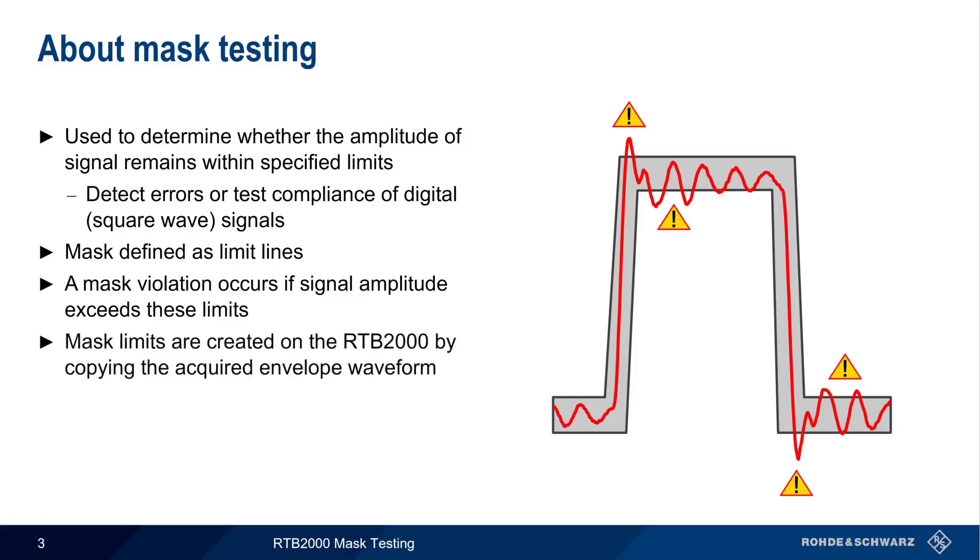On the RTB, masks are created by first copying an acquired waveform, after which the limits are moved and/or stretched to create a tolerance region around the waveform. In the remainder of this presentation, we'll show you, step by step, how to create and run mask tests on the RTB2000.